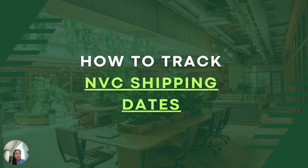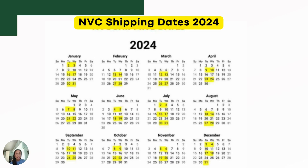Now that you have your NVC case number, let's track the NVC shipping dates. The NVC sends petitions to the embassy every two weeks on Tuesdays and Wednesdays. At the current month — April — the NVC started forwarding petitions to the U.S. Embassy abroad on the 23rd and 24th. Check the calendar dates on screen and validate the current status of your NVC petition.